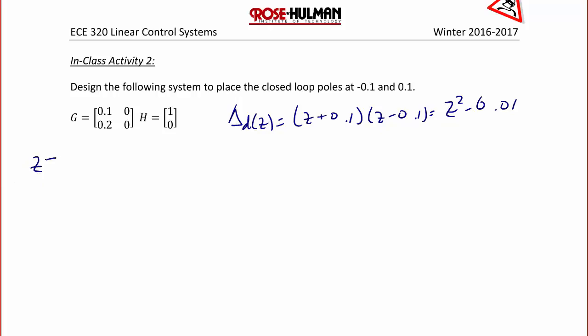Next, we're going to calculate ZI minus G plus HK, which is going to be Z, 0, 0, Z minus 0.1, 0, 0, 0.2, plus 1, 0 times K1, K2.